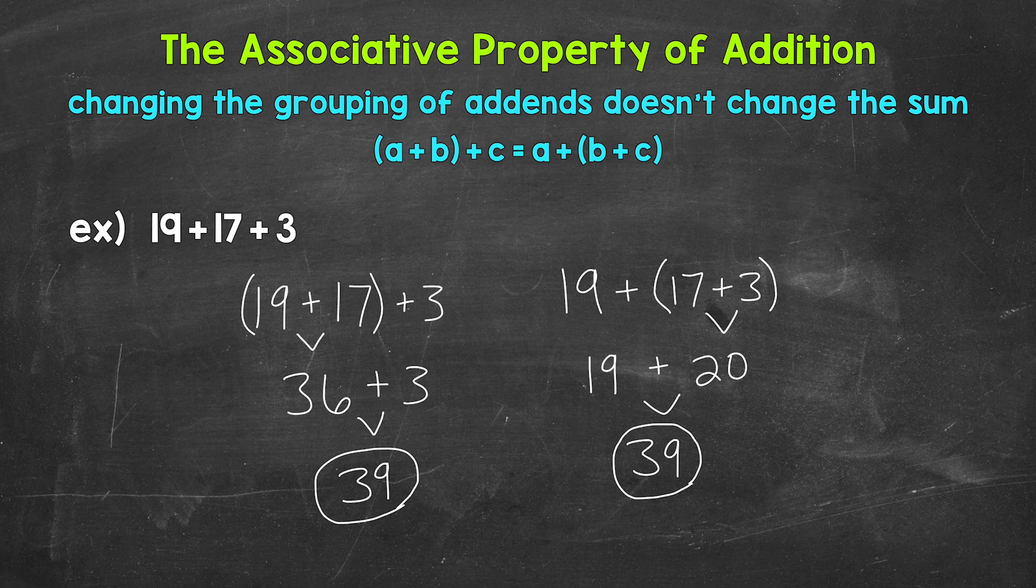So, we get 39 that way as well. And that's the associative property. It didn't matter how we grouped the addends. We got the same sum either way. The same answer either way. So, (19+17)+3 equals 19+(17+3).